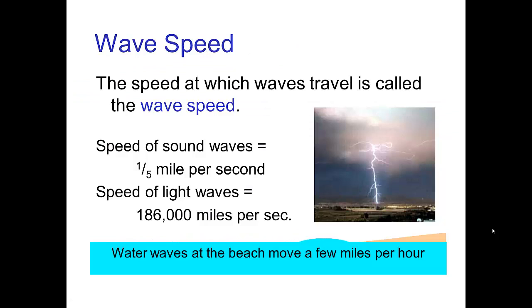Now the third property besides wavelength and frequency is wave speed. Wave speed is simply the speed at which waves travel. Sound waves travel fairly quickly, about a fifth of a mile per second. But this is still a detectable speed. If you see a lightning flash, you don't hear the thunder until a few seconds later because the sound takes a certain amount of time to travel and reach you.